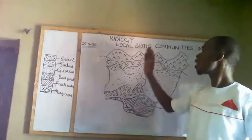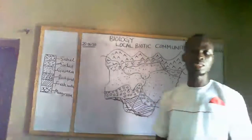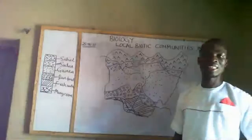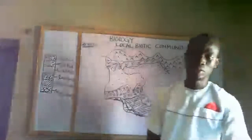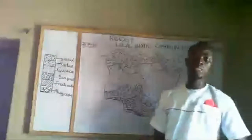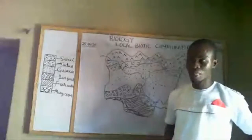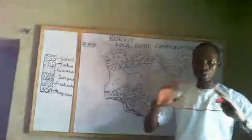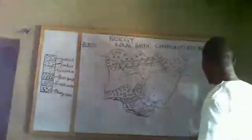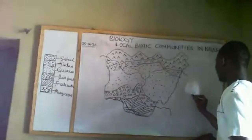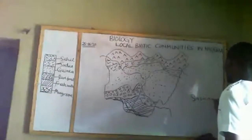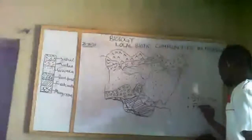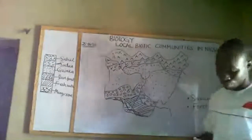Today we want to look at local biotic communities in Nigeria, also referred to as local biomes. In the last class, you were able to understand that a biome is the largest community of living organisms. In Nigeria, we broadly have two types of biomes: savannah and forest.